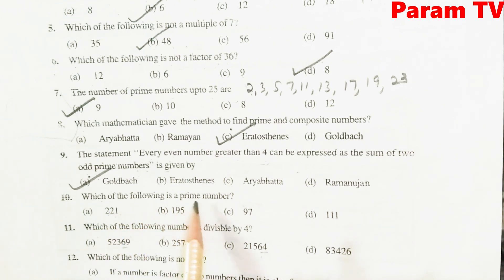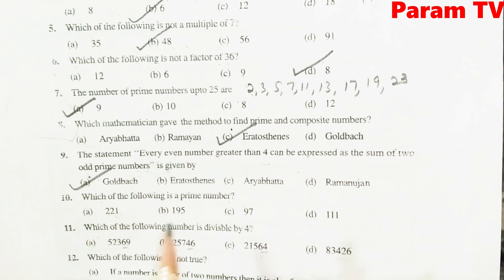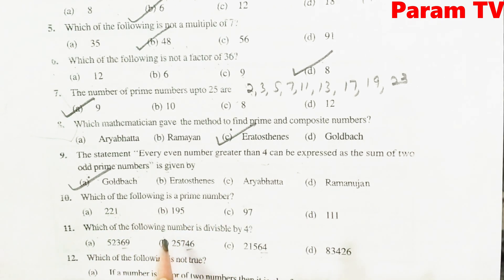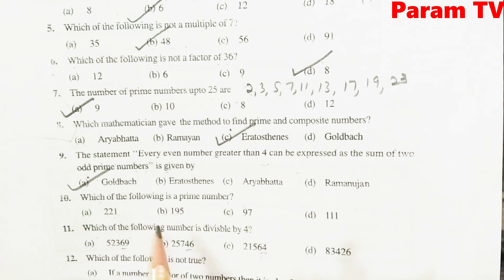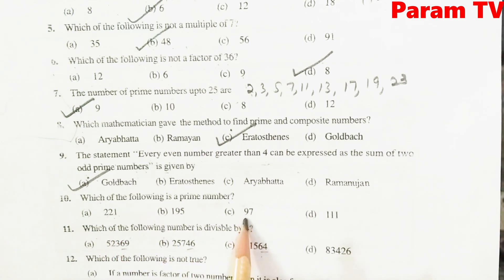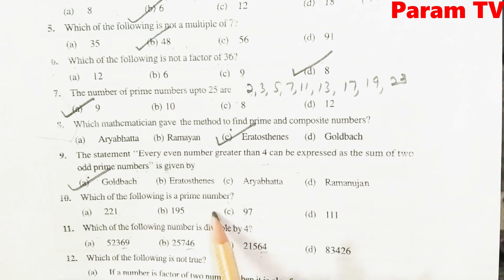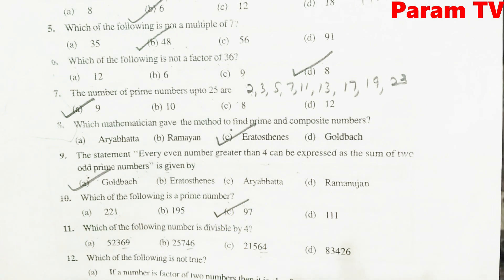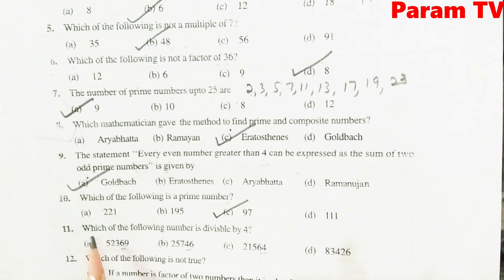Which of the following is a prime number? इनमें से कौन सा prime number है? आप table से check कर सकते हैं — 97 is the right option.